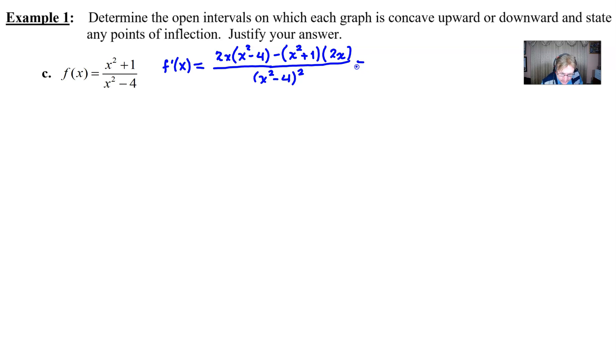Now in this particular problem I'm going to continue to simplify here. So if I multiply through by the 2x I would get 2x cubed minus 8x minus 2x cubed minus 2x all over x squared minus 4 and what this would eventually do is simplify to where the numerator is merely a 10x and the denominator would be x squared minus 4 squared. And that's about where I would leave it before embarking on our second derivative which I'm going to do here in black.